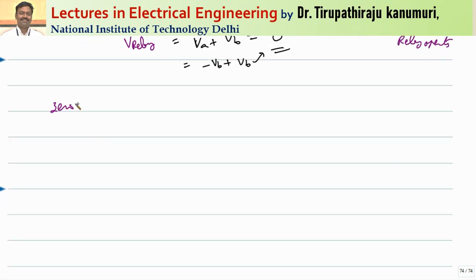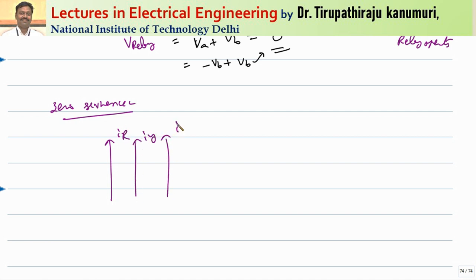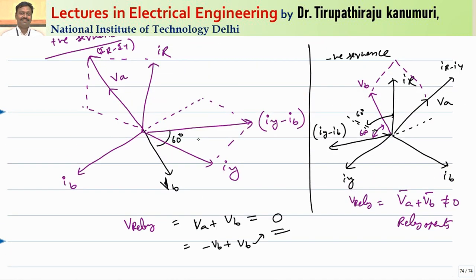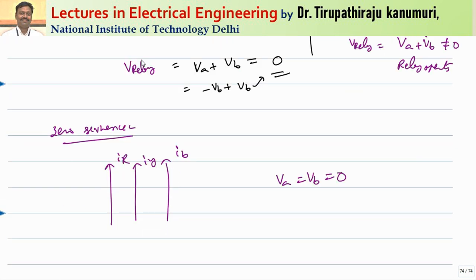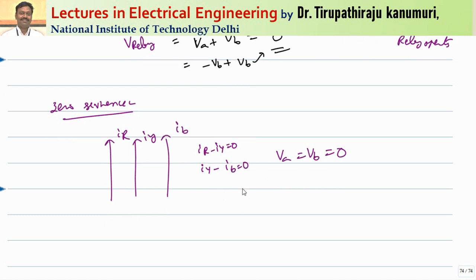For zero sequence components, all currents IR, IY, and IB are in phase. Therefore IR − IY = 0 and IY − IB = 0. This gives VA = VB = 0, so VA + VB = 0 and the relay will not operate for zero sequence components.